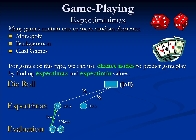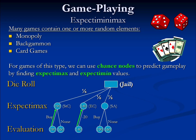If the player rolls a two, the player lands on the Electric Company space. For this example, let's assume someone owns the Electric Company and the player has to pay the owner $20. If the player rolls a three and lands on States Avenue, a result similar to rolling a one occurs — the player has a choice to buy the property or not. Buying results in an overall value of $190, while not buying results in a value of $160, so expecta-max will choose $190. Likewise, rolling a four results in landing on Virginia Avenue, yielding the same results as States Avenue and St. Charles Place.